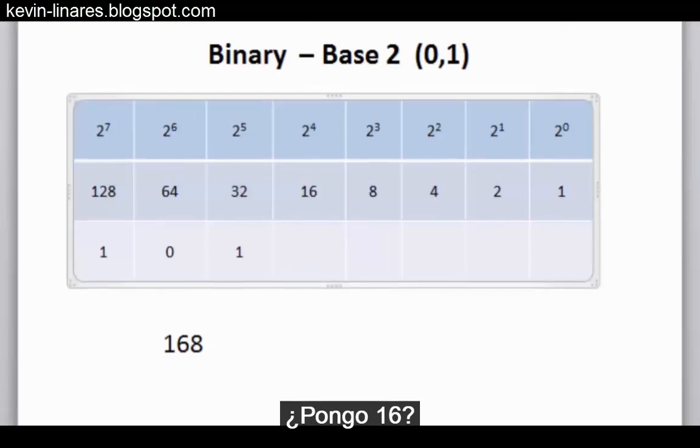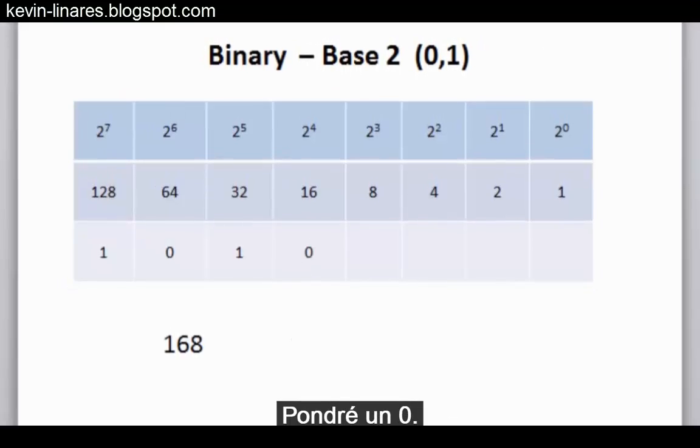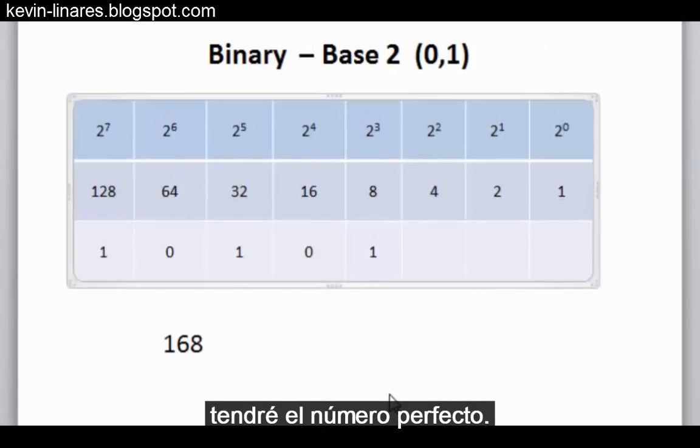Do I need a 16? No, that would make 176, which would go over my target number of 168. I'll put a 0 here. What about an 8? If I add an 8, I'll hit the number perfectly. 128 plus 32 plus 8 is 168.